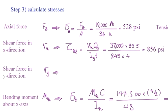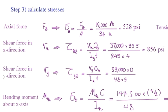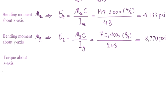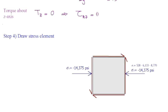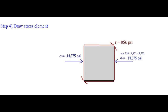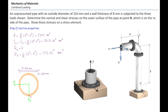For shear force in the y-direction, that would be zero because Q is zero. And the stress caused by torque would be zero, because there is no torque. Putting them all together to draw the overall stress element: the stress in the horizontal direction is negative 14,375 psi. There is no stress in the y-direction. Shear stress equals 856 psi. Note that for normal stresses, we add them together because they are all acting on the same plane.